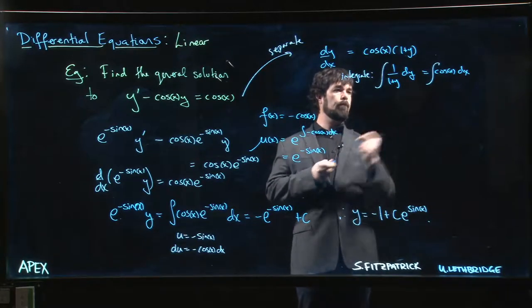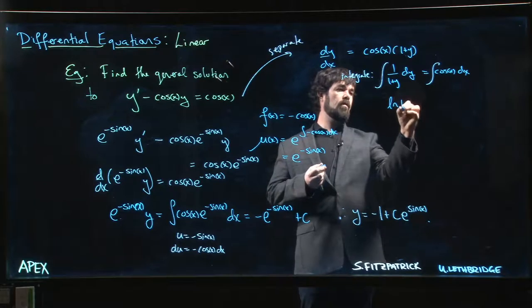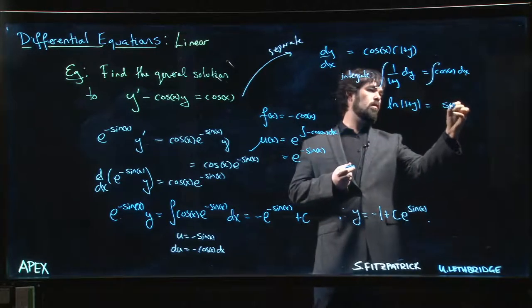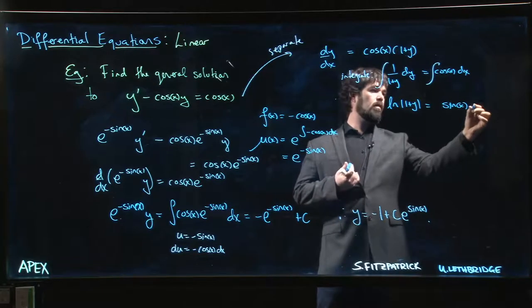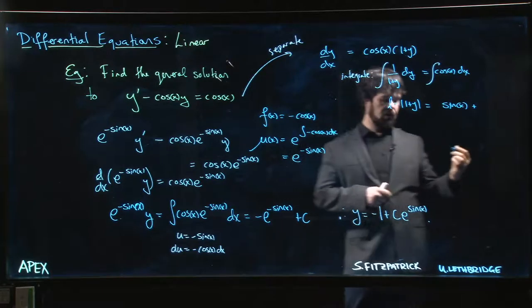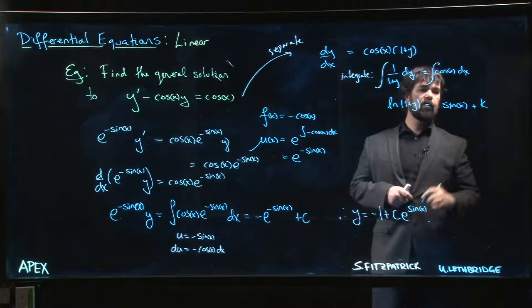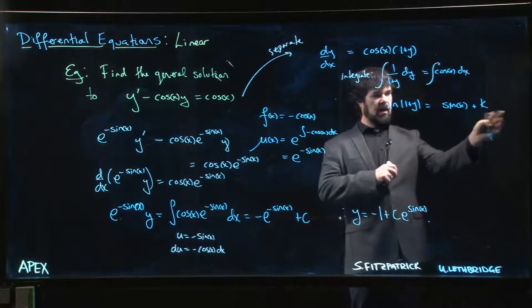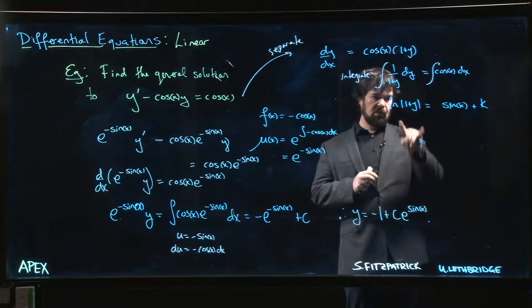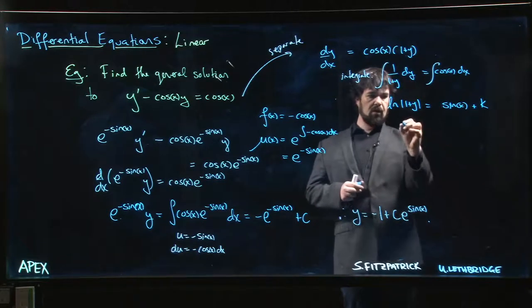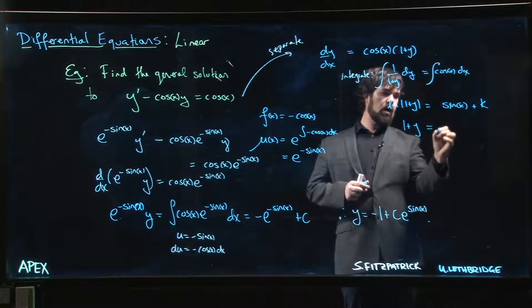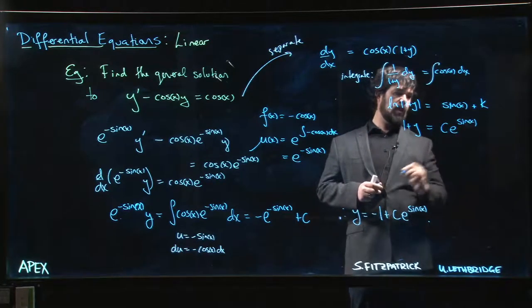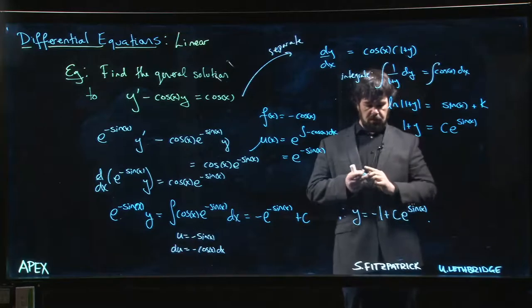We get natural log of 1 plus y is equal to sin x plus some constant. Maybe we'll call it k. We do the usual thing. We exponentiate both sides, e to the k, we're going to write it as another constant, which accounts for the absolute value, accounts for the 0. 1 plus y is equal to c e to the sin x, and subtracting 1 from both sides, we get